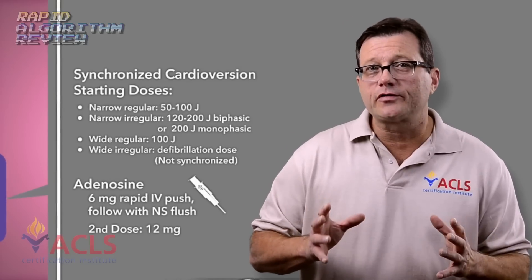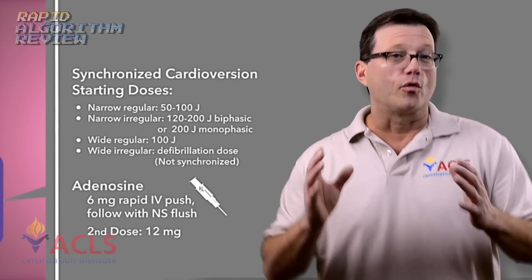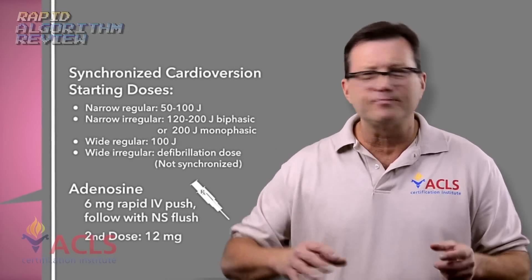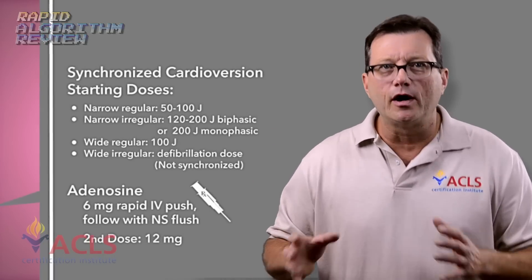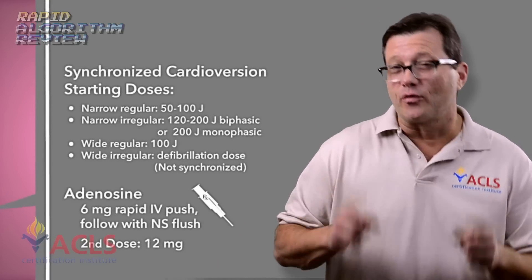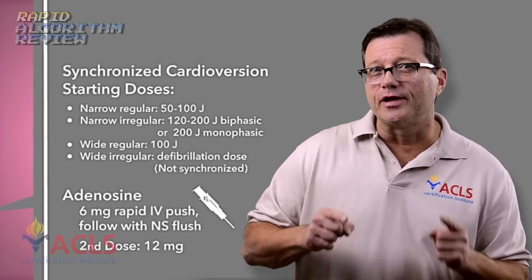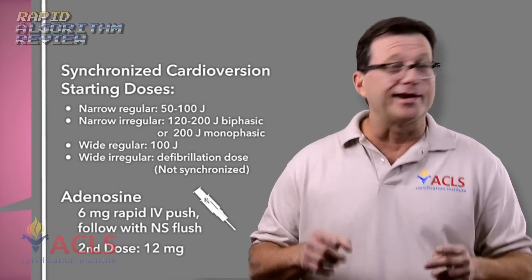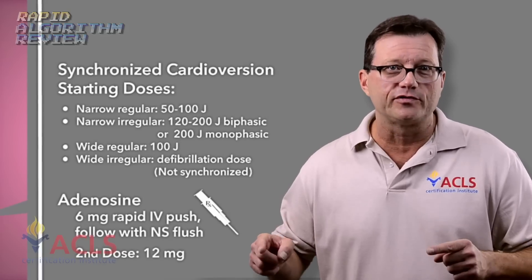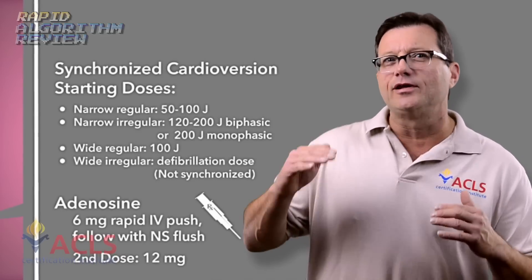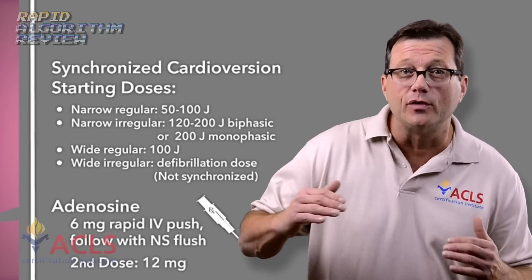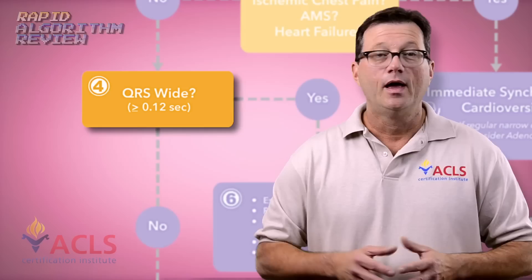Now, synchronized cardioversion for a regular narrow complex tachycardia: 50 to 100 joules. If it's an irregular narrow complex tachycardia, like an a-fib with a rapid ventricular response, you're going to start your synchronized a little higher, maybe 120 to 200 joules.